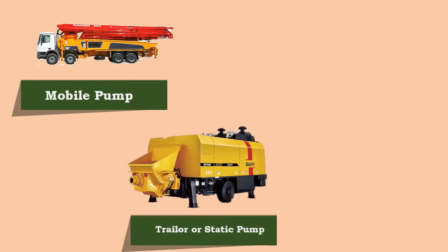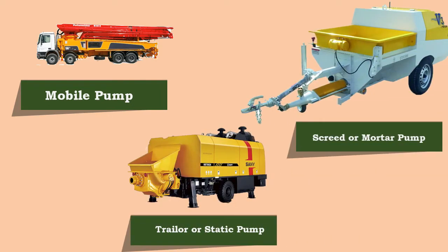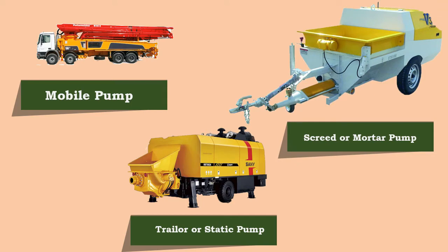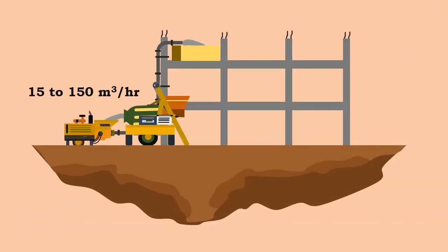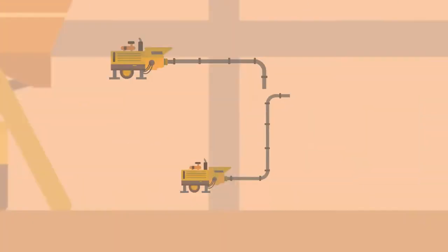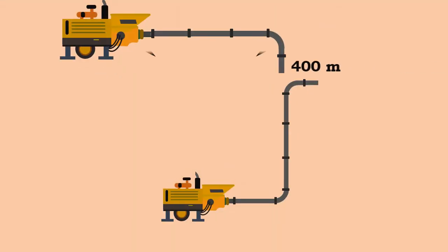The pumps of capacity 15 to 150 meters cube per hour are commonly used. These pumps can push concrete up to 400 meters horizontally and up to 80 meters vertically.